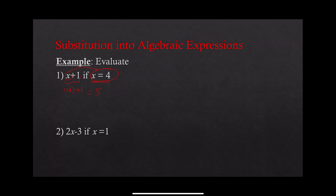Another example: 2x minus 3, if x equals 1. Remember, 2x means 2 times x, so write 2 times bracket, then minus 3. Inside the bracket put 1: 2 times 1 minus 3, which is 2 minus 3, and finally 2 minus 3 is negative 1.